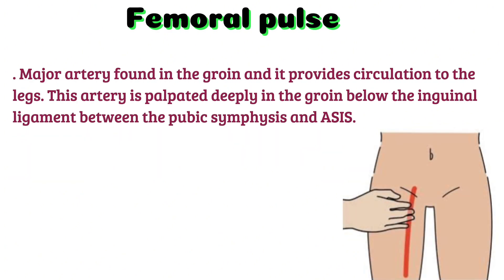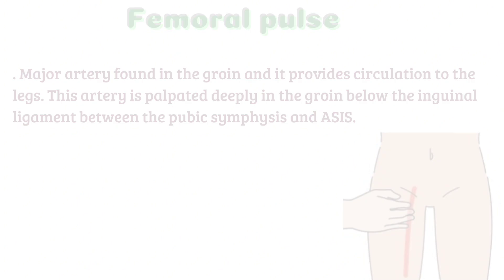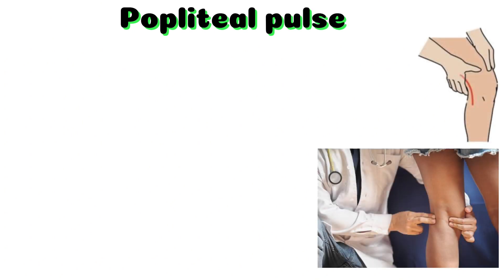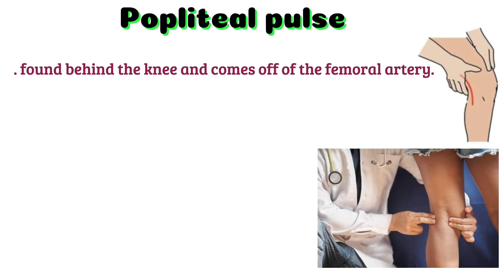Femoral pulse: this is a major artery found in the groin that provides circulation to the legs. This artery is palpated deeply in the groin below the inguinal ligament, between the pubic symphysis and the anterior superior iliac spine.